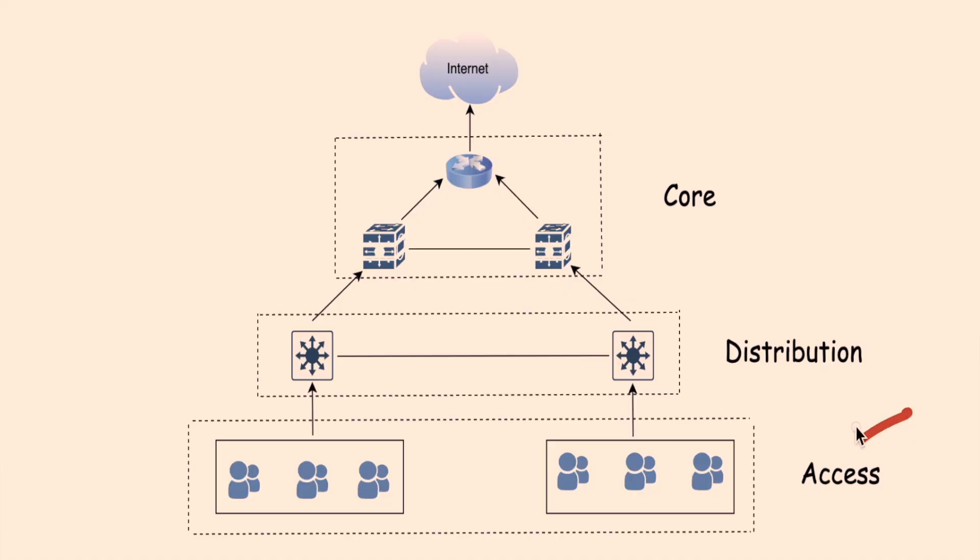Let's understand how to use a web content filter. Here's the typical network architecture of most companies — we have the access layer, the distribution layer, and the core layer just before the internet. There are two main deployment modes: the inline mode and the out-of-band mode. For the sake of this video, I'll focus on the inline mode of deployment.